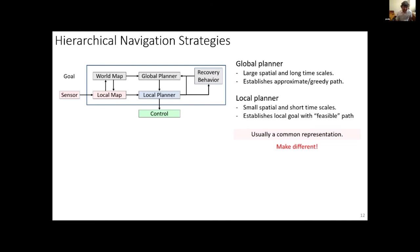Most online navigation planners that assume little about the world are bifurcated into a global and a local part. The global planner operates at large spatial and long time scales, planning the global path given incomplete information. The local planner resolves navigation on a smaller spatial scale and shorter time scale, trying to follow the global path while being sensitive to obstacles not present in the original world map.